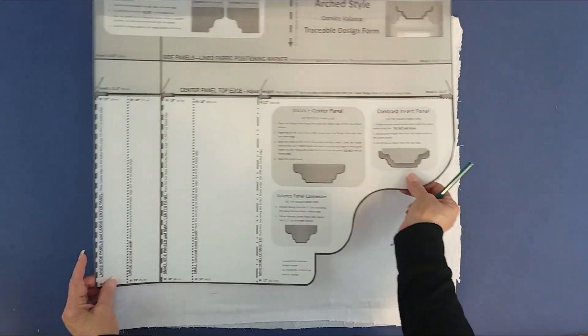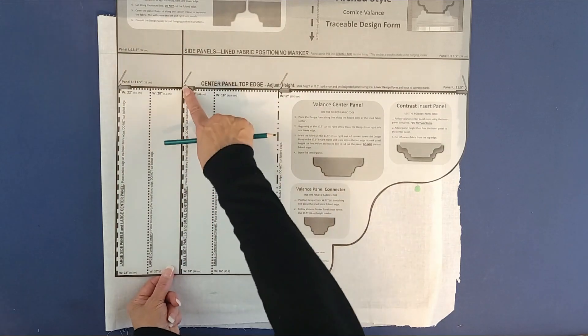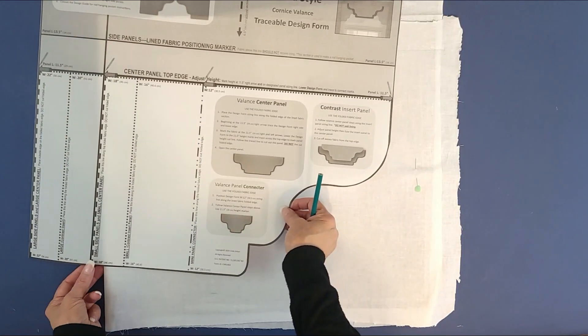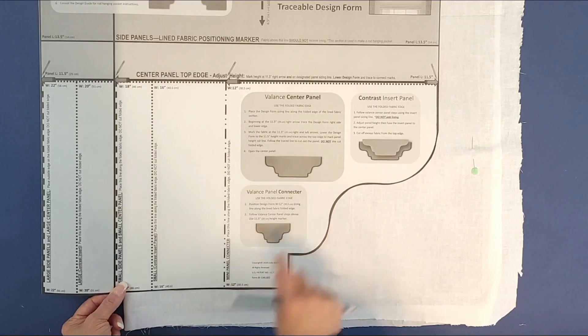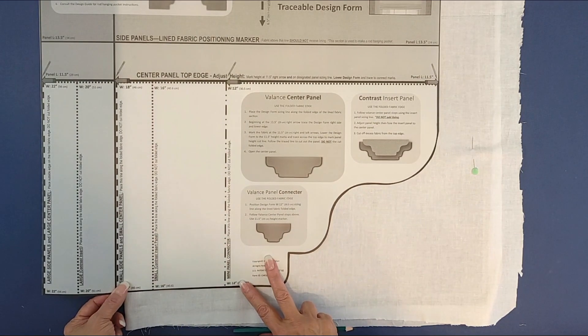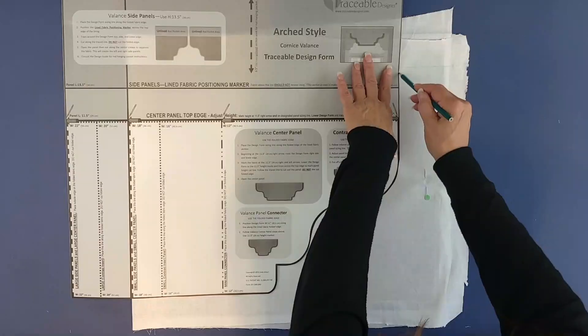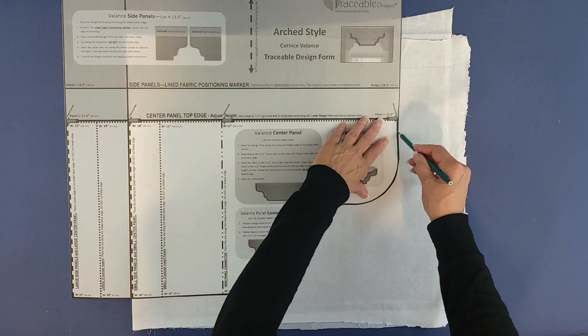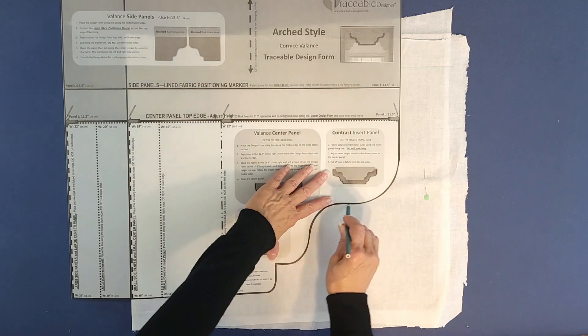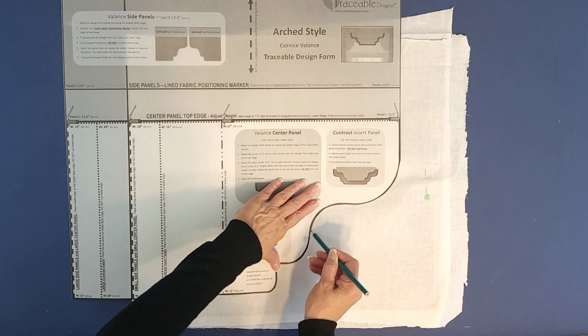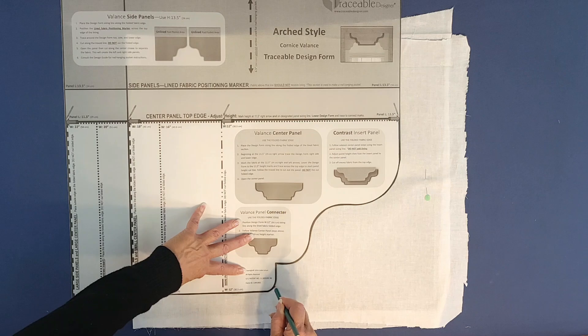If you're doing a wide or narrow custom width, mark your fabric off to the right. In my case, I'm using the small sizing line. Position that on the fold and slide the design form down to your mark. Then trace from the top line around the right side of the design form underneath, finishing at the folded fabric edge.